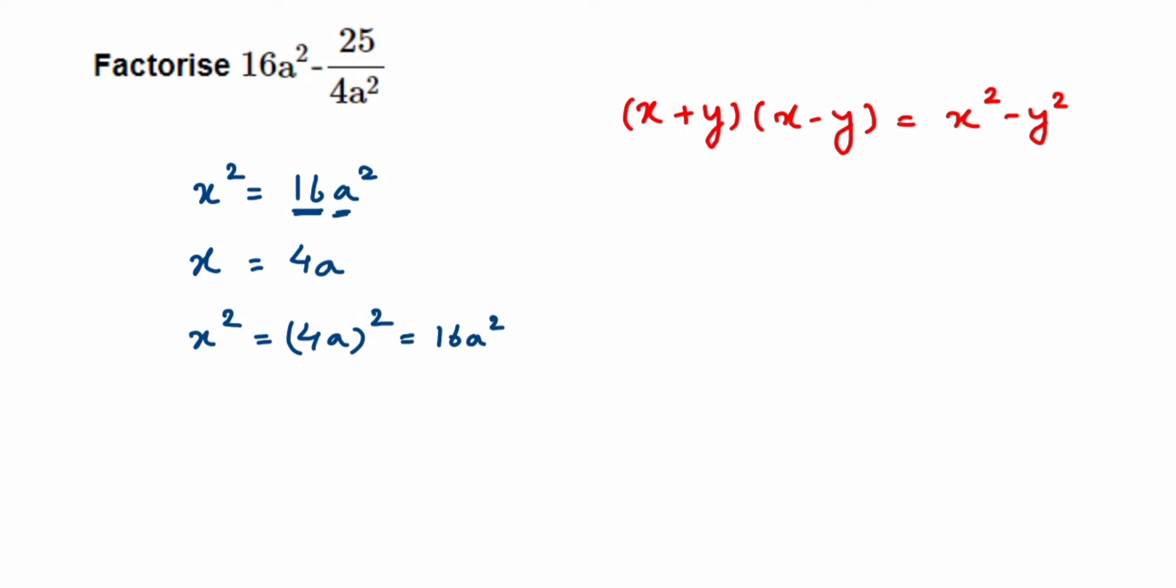For y², we have 25 upon 4a². We want only the y value. Since 25 is the square of 5, 4 is the square of 2, and we have a², y will equal 5 upon 2a.